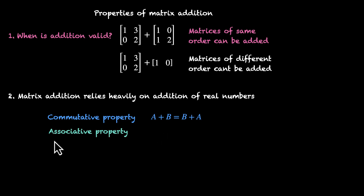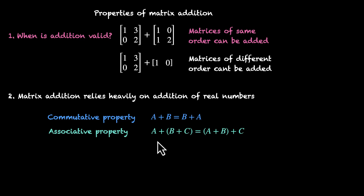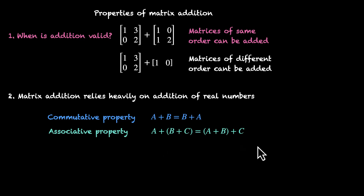Then we have the associative property. This says if you have more than two matrices — let's say three matrices A, B, and C — and you're adding all three of them, you can group them in any order. You can first add B and C and then add the sum to A, or you can first add A and B and then add the sum to C. This also works because we have the same thing working for real numbers.